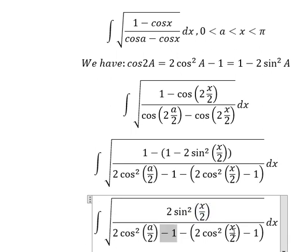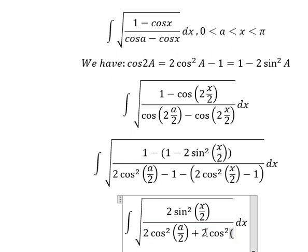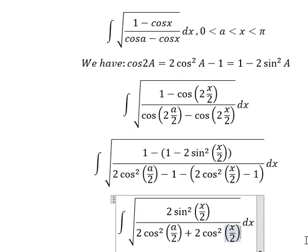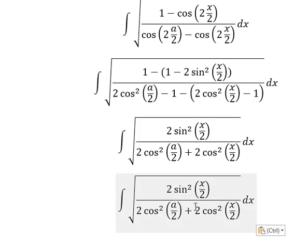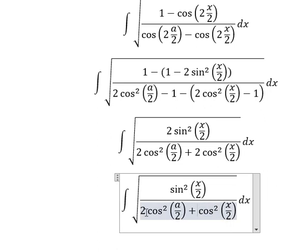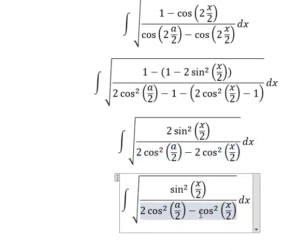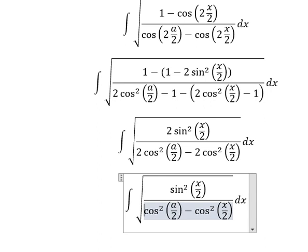So negative 1 minus negative 1, they cancel. Now we just have only this one. Negative 1. So the 2, 2, and 2, we simplify. Negative 2. So negative 1 cancels, negative 1 cancels, and we have number 2.